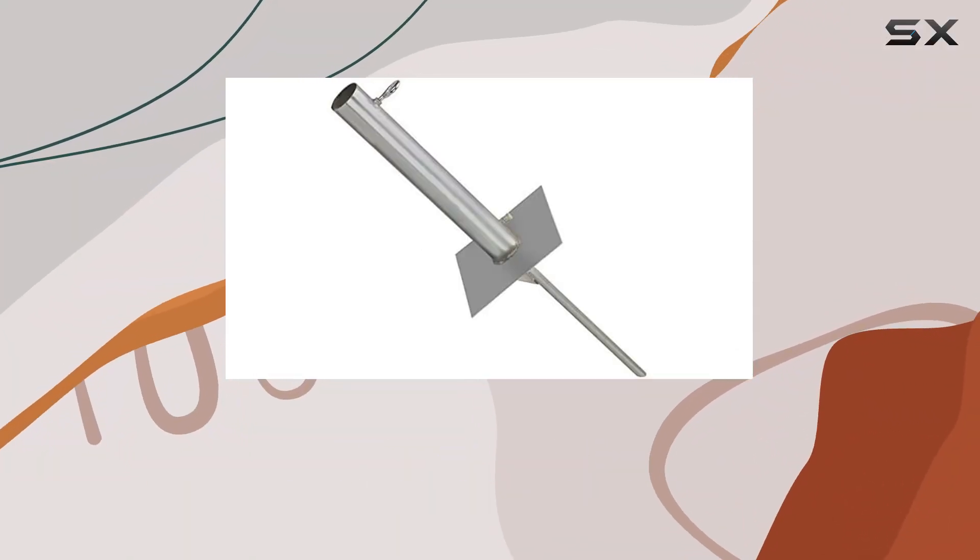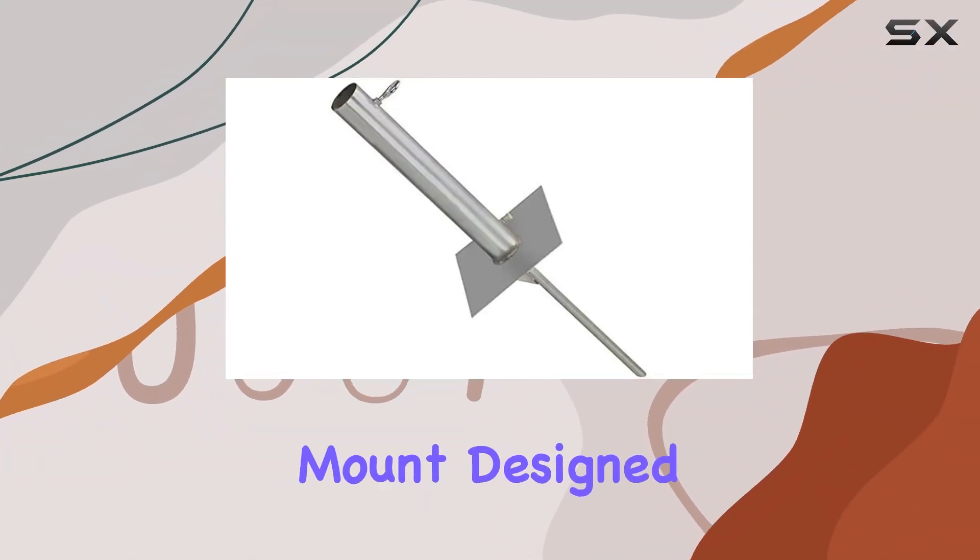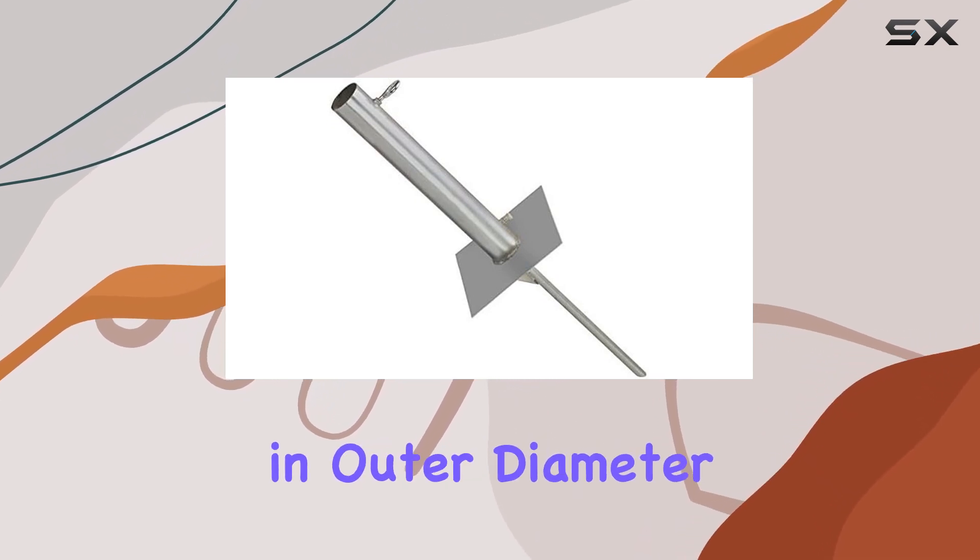Today, we're diving into the EZ-UP EZ-TS 50 ground mount, designed for masts up to 2 to 1, 4 inches in outer diameter.